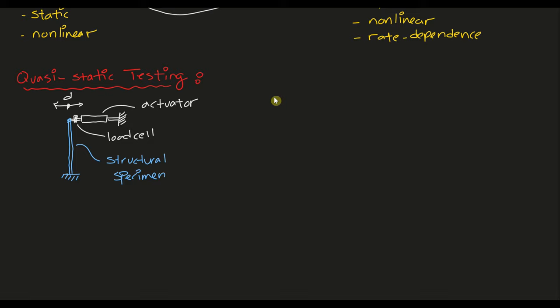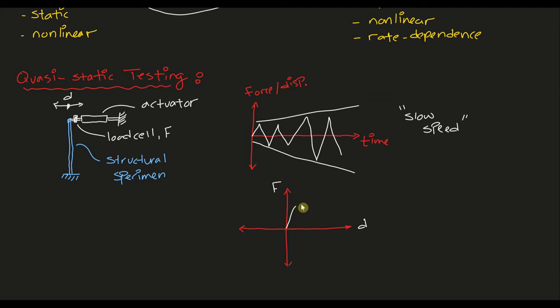The performance of the structure is then assessed under cyclic load reversal and amplitude variations. And with this method, the non-linear hysteretic behavior of a structure is obtained and the slow and static nature of the method allows researchers to observe the damage in the physical specimen as it develops in real time. So we get a hysteretic behavior that sort of looks like this.